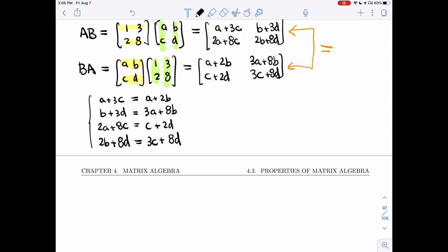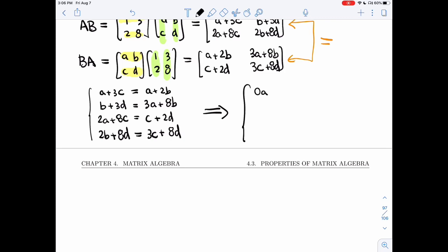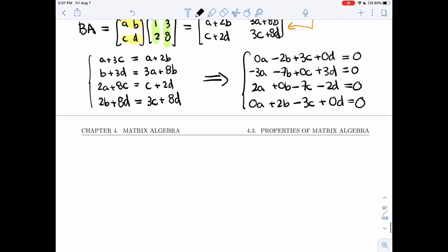So this is a linear system. Let's put all the variables on the same side, and then we'll be able to put it in a matrix. So I'm getting 0A minus 2B plus 3C plus 0D equals 0. I get minus 3A minus 7B plus 0C plus 3D equals 0. I'm getting 2A plus 0B minus 7C minus 2D equals 0, and then 0A, I get 2B minus 3C, and the Ds cancel. So here's the system I want to solve.